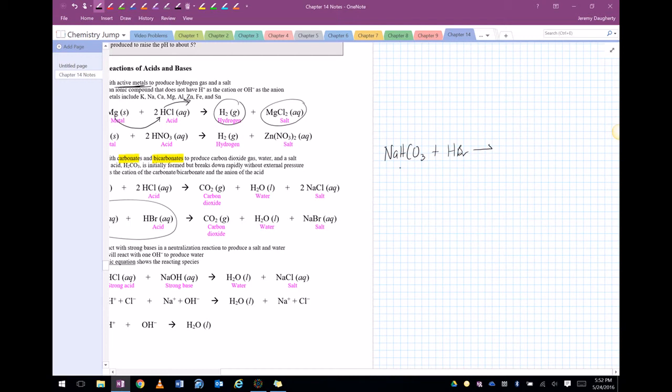Now what this yields, this is still just a double replacement reaction. So the Na is going to go with the Br and the H plus is going to go with HCO3 minus. So that's going to form H2CO3 plus NaBr because Na is plus one, Br is minus one, H is plus one, HCO3 is minus one. So that's how it works out.